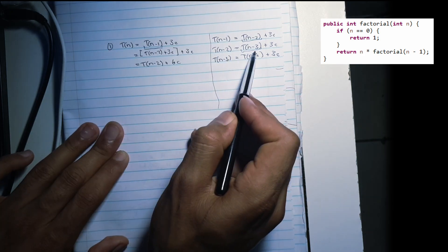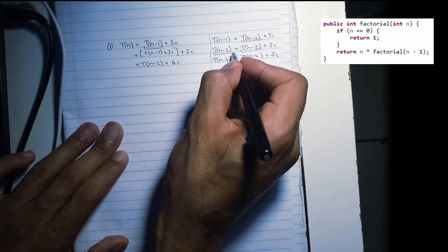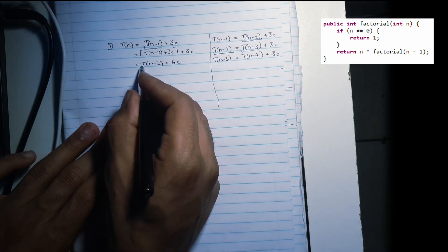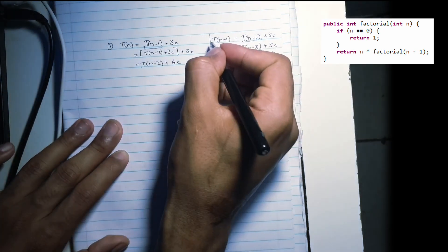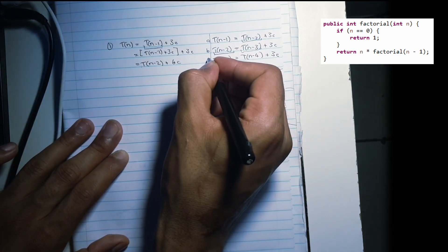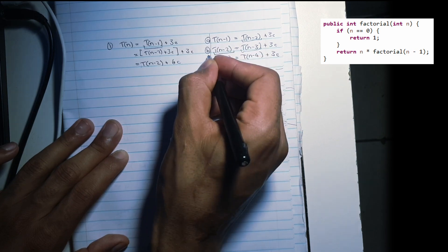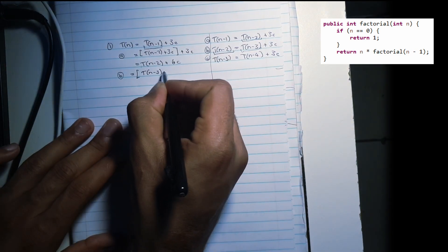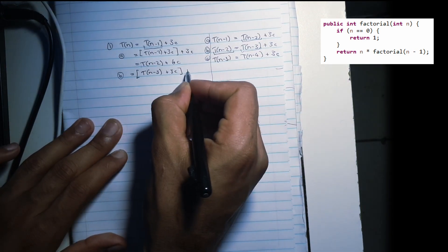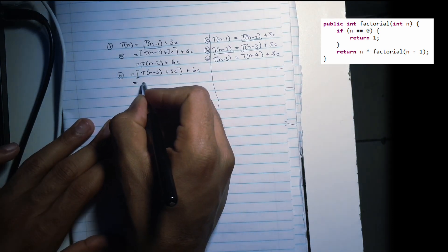Then we're going to do our second substitution. We're going to substitute the value of T of N minus two and see what we get. I'm going to call these A, B, C. So substituting gives us T of N minus three plus 3C plus 6C. And if we simplify this, we get T of N minus three plus 9C.